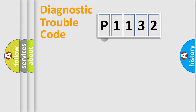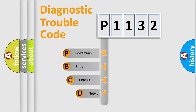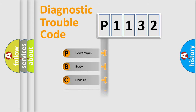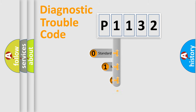First, let's look at the history of diagnostic fault code composition according to the OBD2 protocol, which is unified for all automakers since 2000. We divide the electrical system of the automobile into four basic units: powertrain, body, chassis, and network. This distribution is defined in the first character of the code.